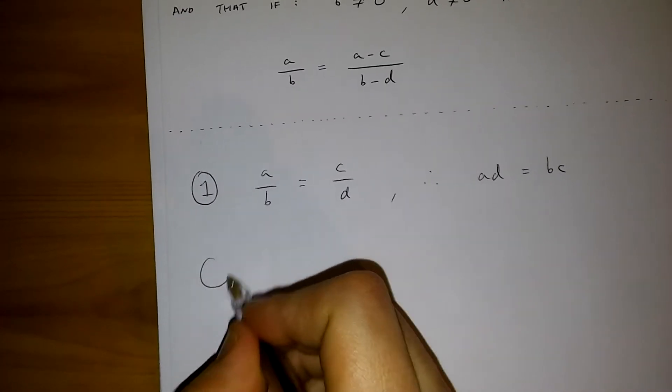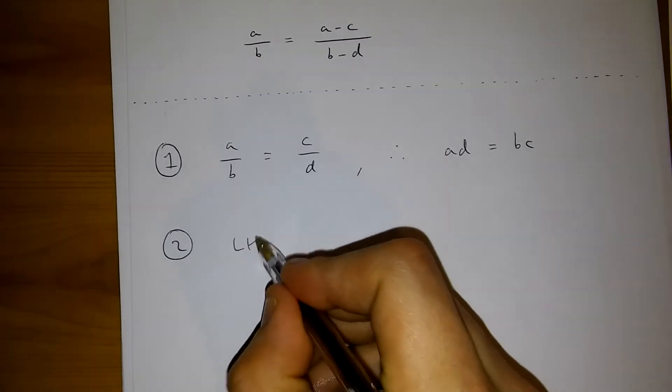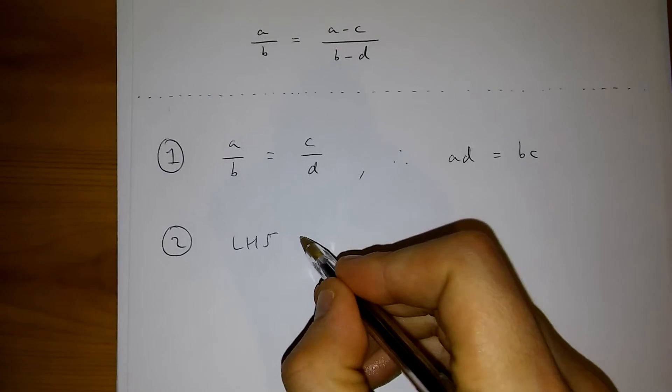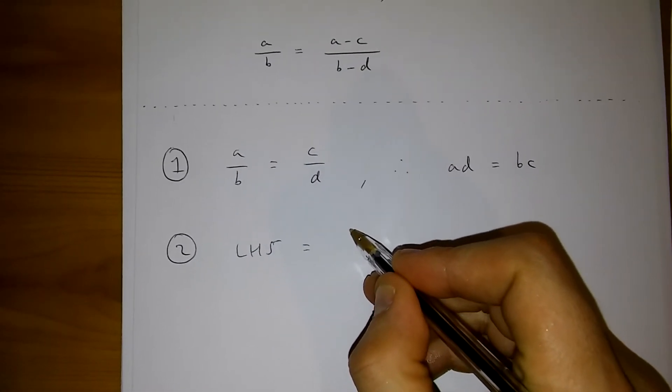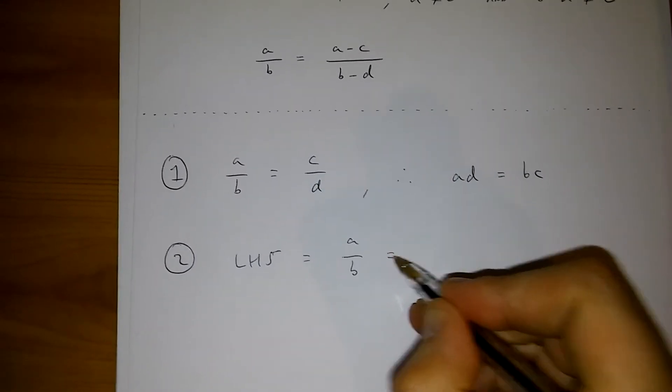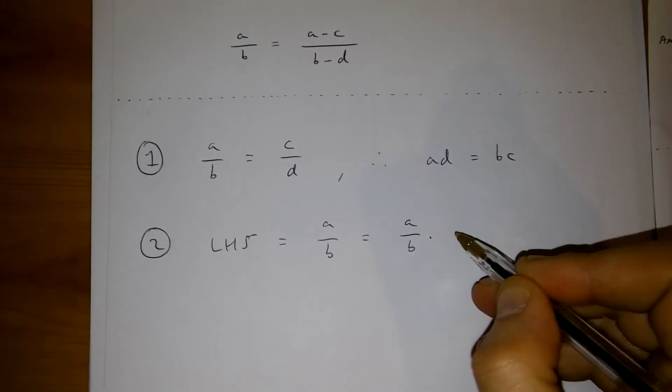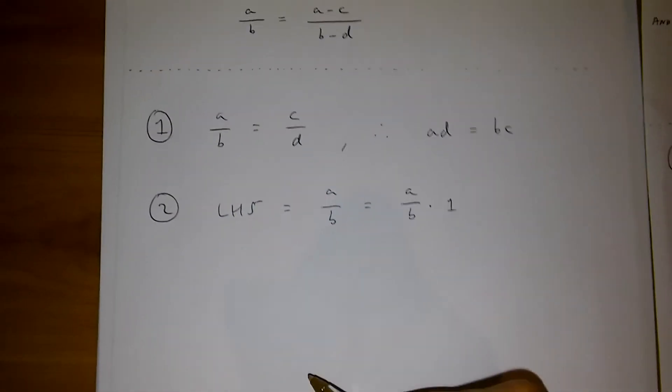Now, what I do is write left-hand side is equal to a over b, and this is the same as a over b times 1.